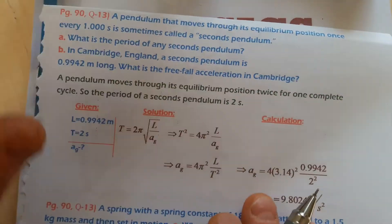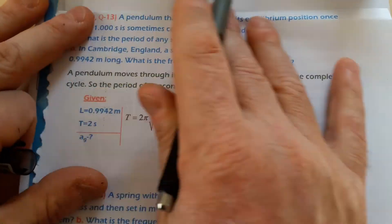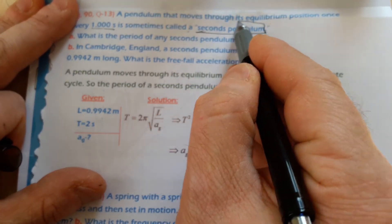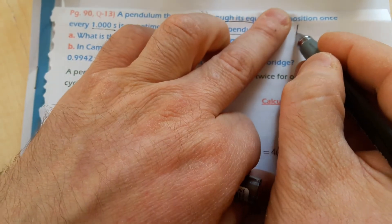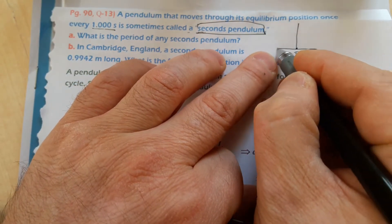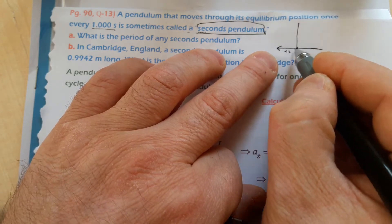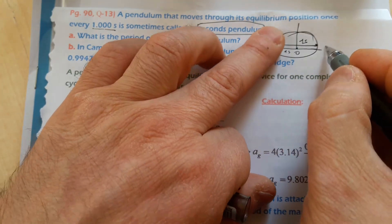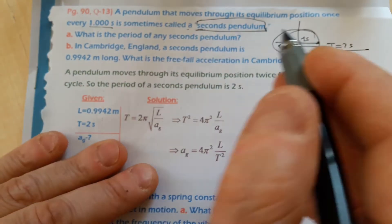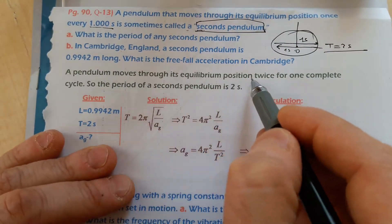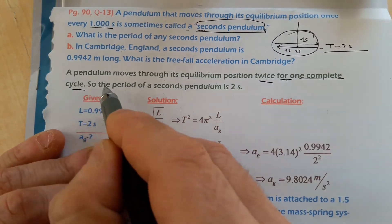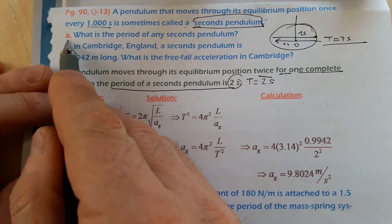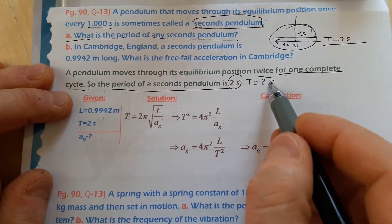Question number thirteen: a pendulum that moves through its equilibrium position once every one second is called a seconds pendulum. Since it passes equilibrium once going left and once going right per cycle, the total time for one complete cycle is two seconds. Therefore, the period of a seconds pendulum is two seconds. Part A asks: what is the period of the seconds pendulum? The answer is two seconds.